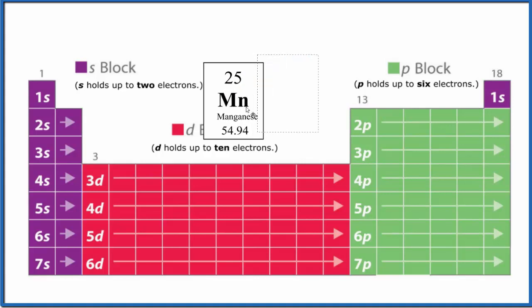And manganese is right here on the periodic table. So let's use this pattern to get up here to the 25. We start with the first energy level, that's 1s. We have 1s¹, 1s².